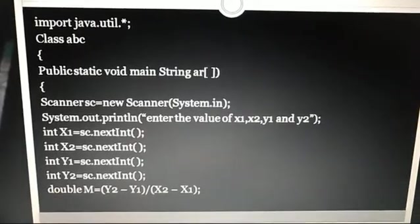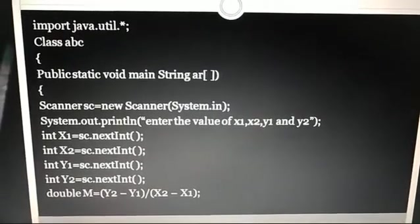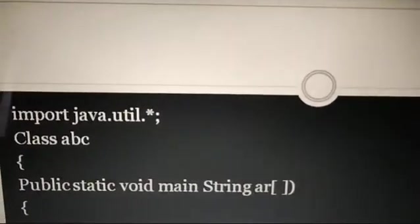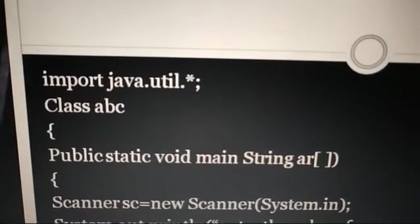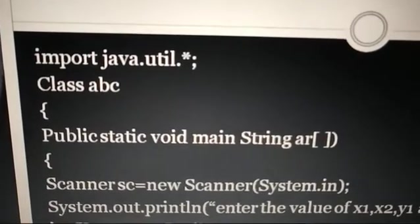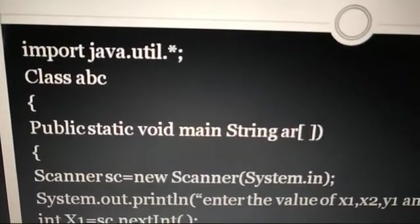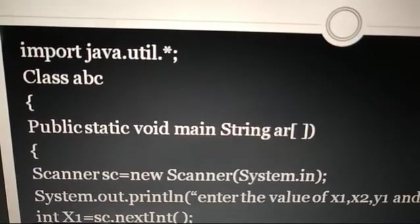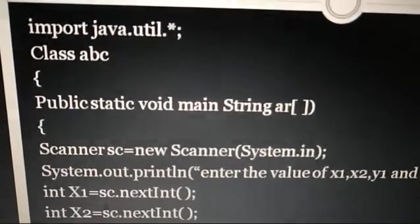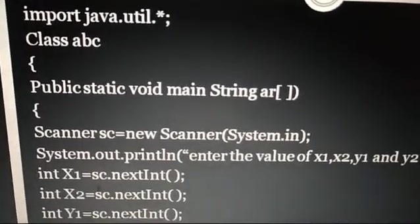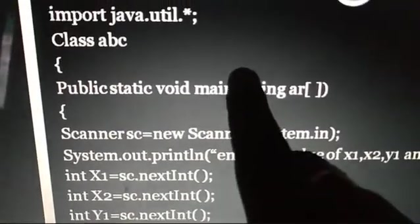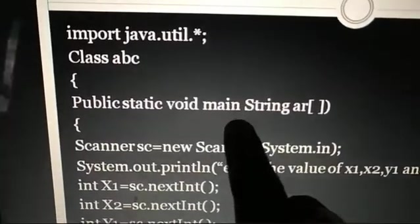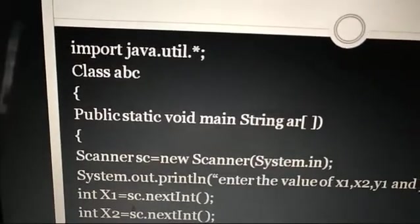If you see the first line, this is import java.util.* - that is the package declaration. Thereafter I declared the class, the class name is ABC. Then I declared the main function: public static void main String args. You can see here I missed one small bracket, so that bracket will be here.